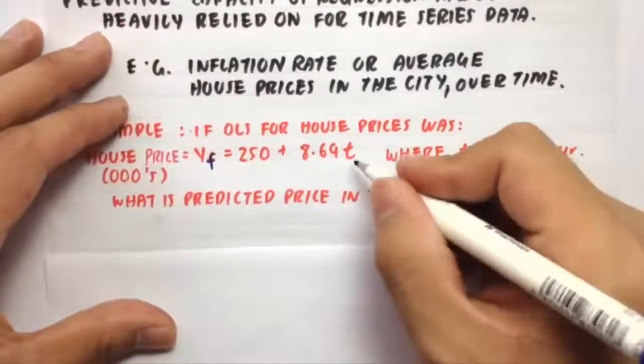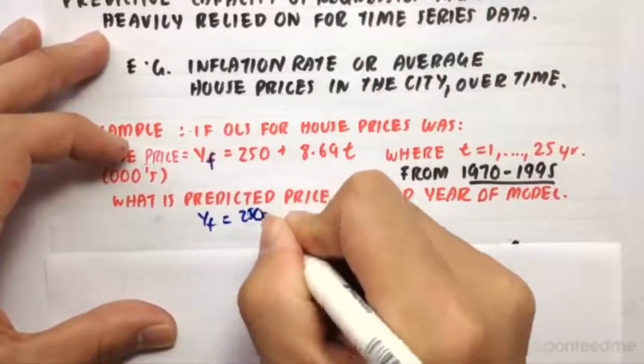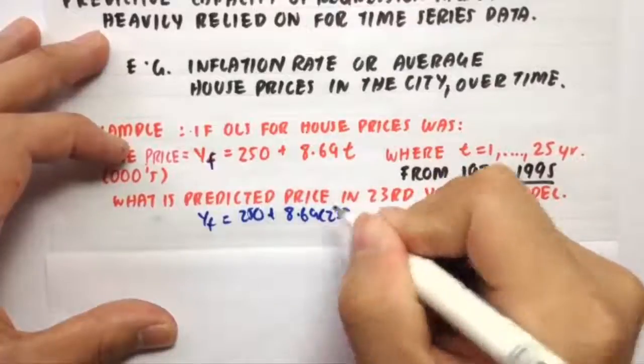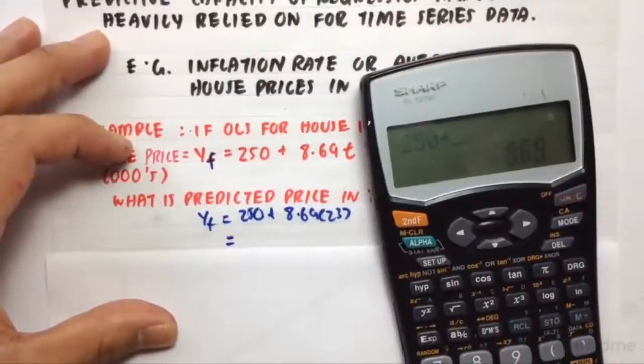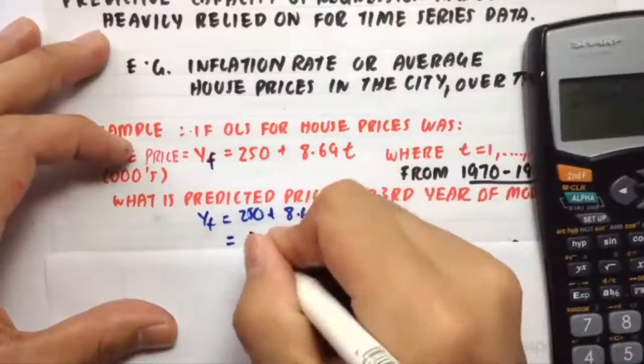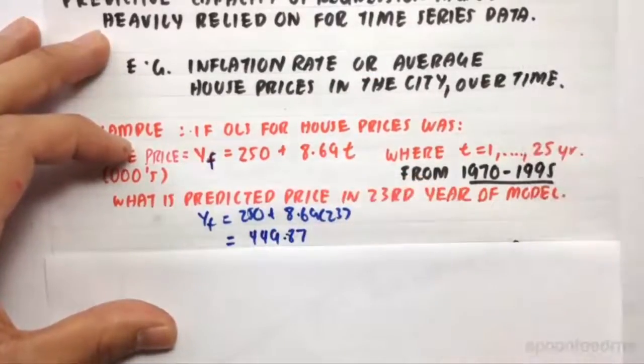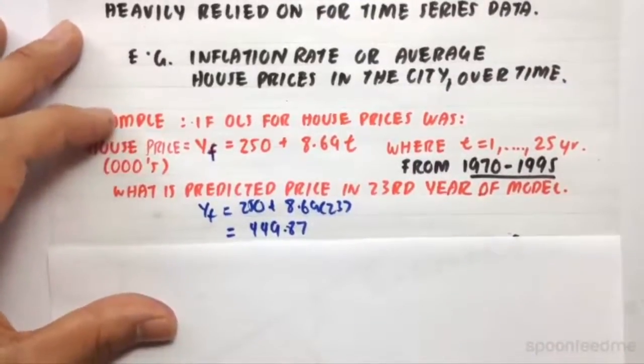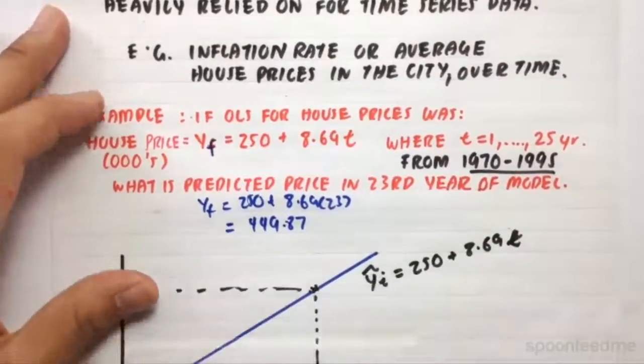So all we need to do is plug in 23 into that T and then we'll get YF equals 250 plus 8.94 times 23, which equals 250 plus 8.94 times 23. That gives us 449.87. So we can expect, or it's forecasted that in the 23rd year, the price of the house will be $449,870.